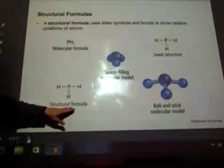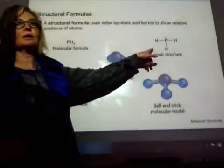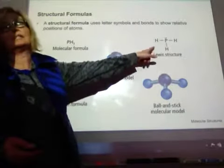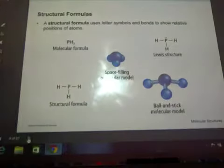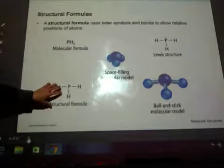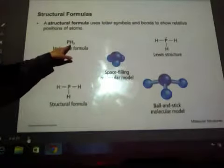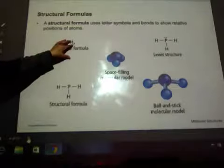So a structural formula will not have any dots. A Lewis structure has the valence electrons on it. I like to use this one more because it shows all the electrons. However, in a hurry, I'll draw this. Molecular formula means you're just giving me the formula, writing it out, not drawing anything.